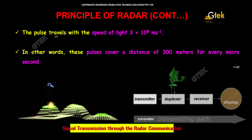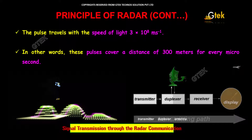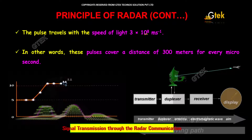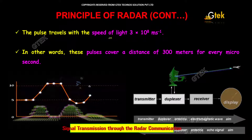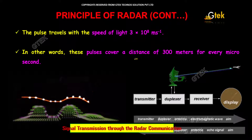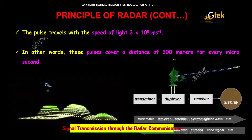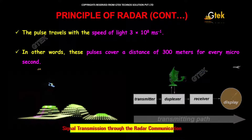The pulse travels with the speed of light — 3 into 10 to the power 8 meters per second. In other words, these pulses cover a distance of 300 meters for every microsecond.